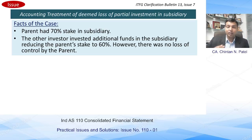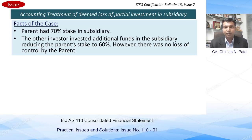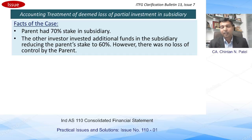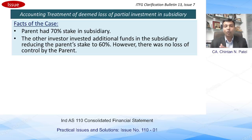Now, another investor has been issued additional shares. The 70% investment held by the parent is not sold, but additional shares have been issued to other investors, causing a reduction in the parent's investment from 70% to 60%. So there are three important points: there is no loss of control, there is no sale of investment, and there is a deemed loss of investment as far as the parent is concerned.